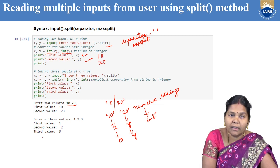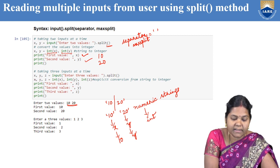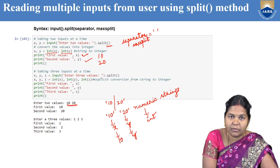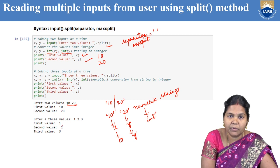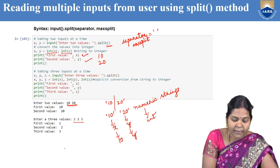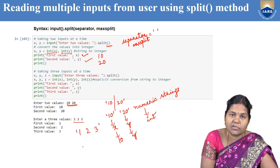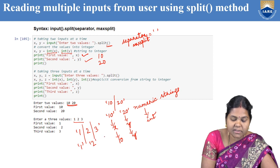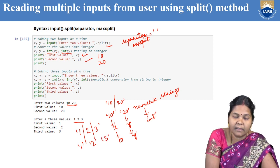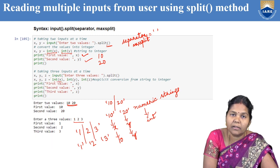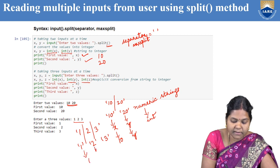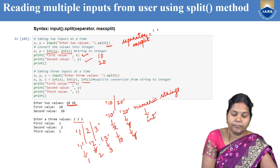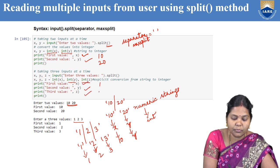Similarly, to read three inputs: x, y, z = input('Enter three values:').split(). If you give input as '1 2 3', the split method splits it into three parts — '1', '2', '3' — each as a string. Then explicitly typecast: x, y, z = int(x), int(y), int(z). After conversion, x contains 1, y contains 2, and z contains 3, and the output will be 1, 2, 3.